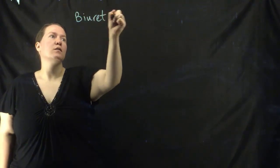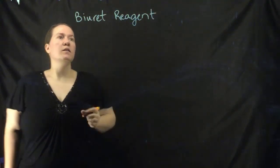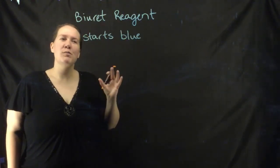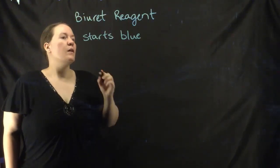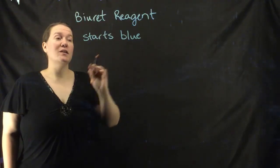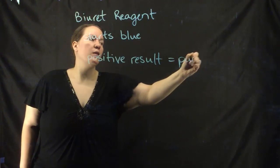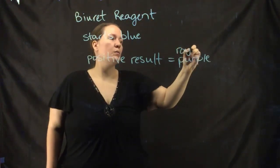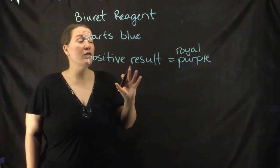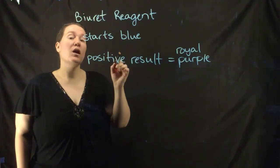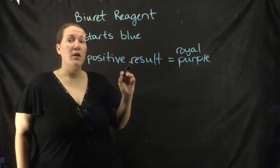Our second test was the biuret reagent. This confuses people because it starts blue — not an aquamarine blue, but more of an indigo blue, kind of purpley. The positive result is purple — like royal purple, true true purple. So you're going from an indigo blue with a slight hint of purple to a deep dark purple.